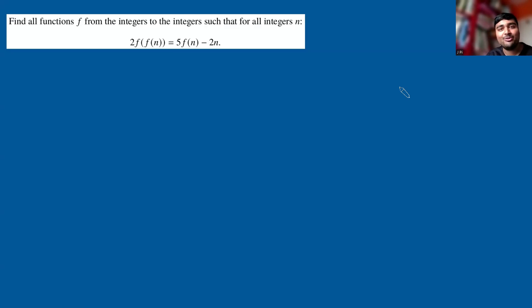Here's a problem from the 2024 BMO2. We want to find all functions f from the integers to the integers such that for all integers n, 2f(f(n)) = 5f(n) - 2n.